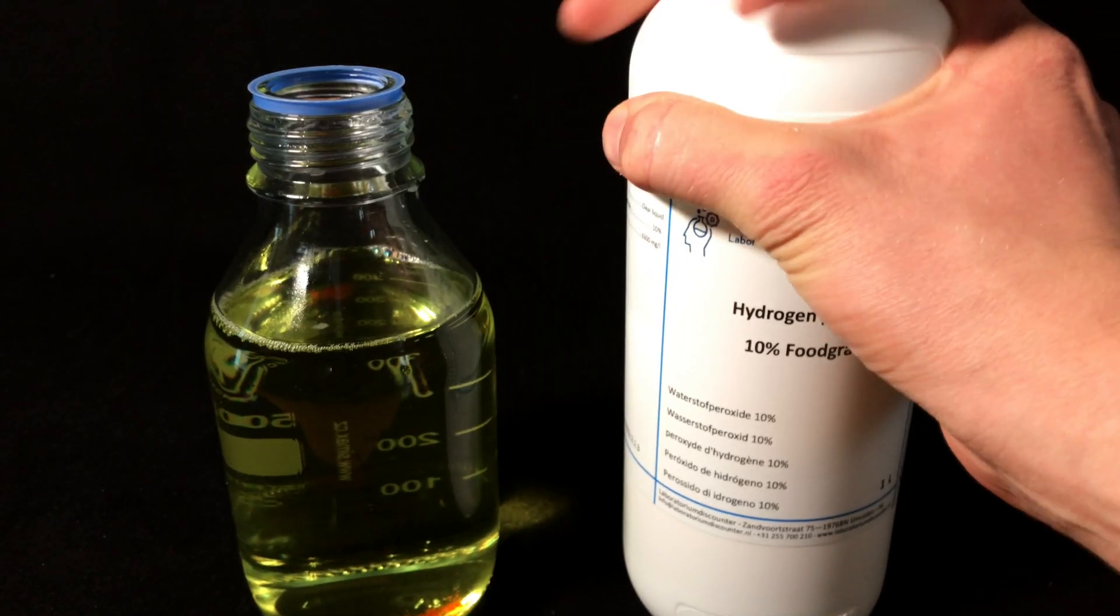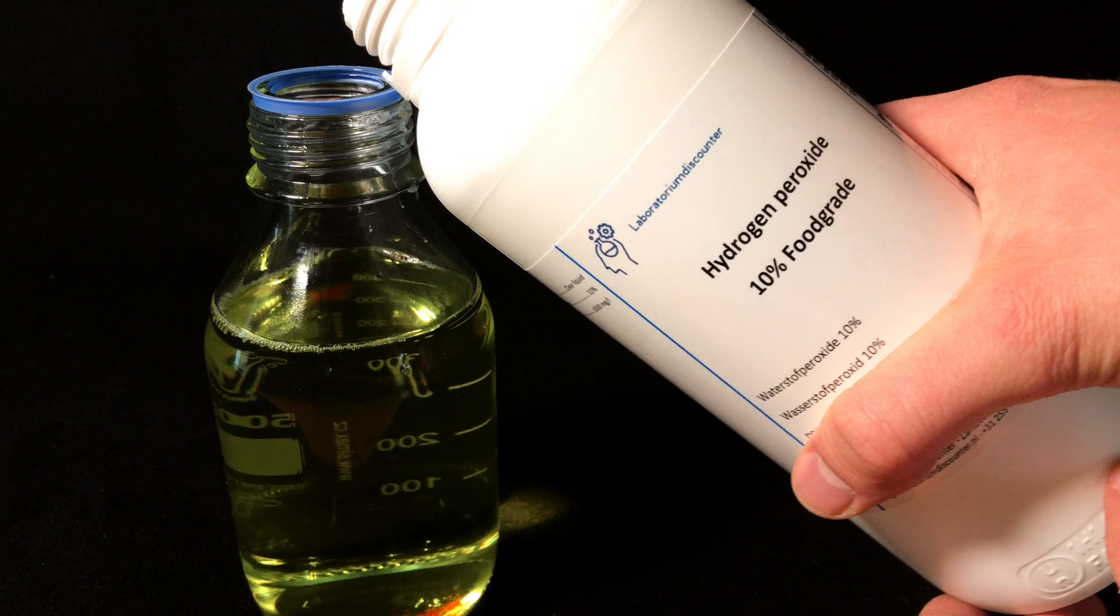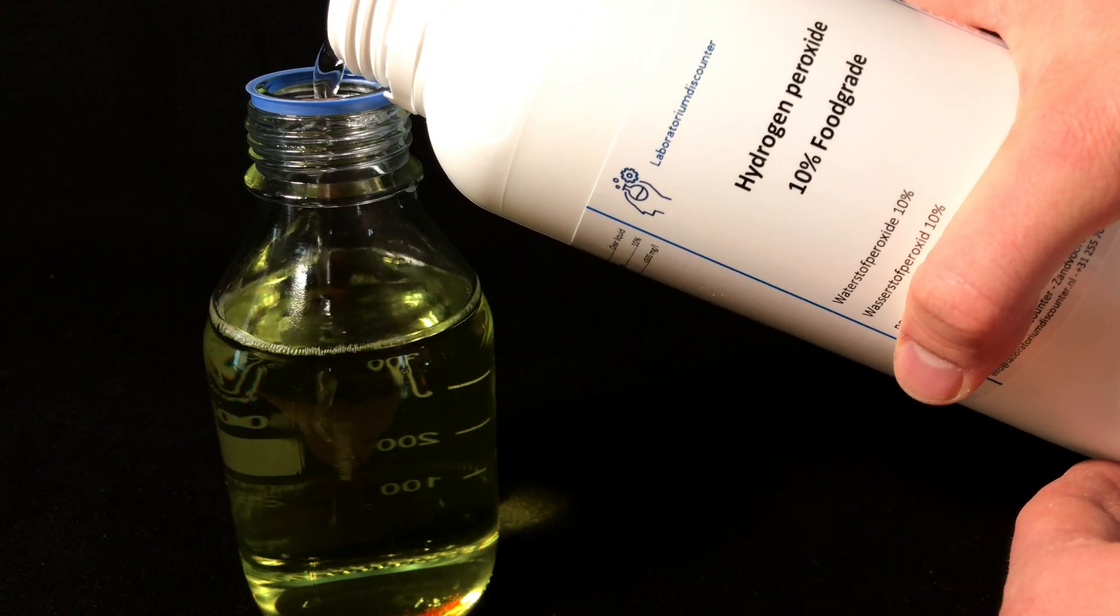To the yellow solution, which is the potassium ferricyanide, about 10 ml of 10% hydrogen peroxide were added as an oxidizing agent.